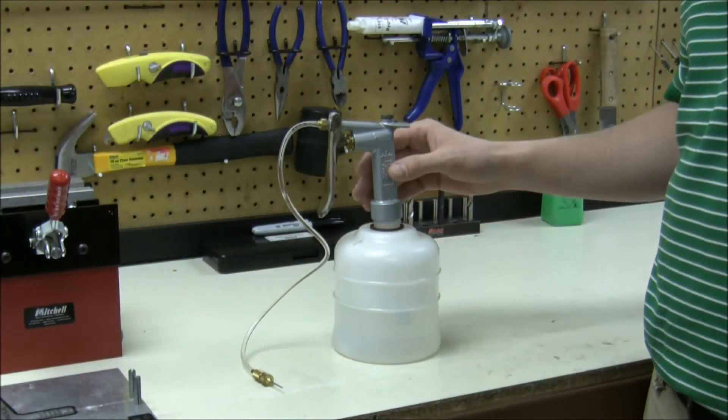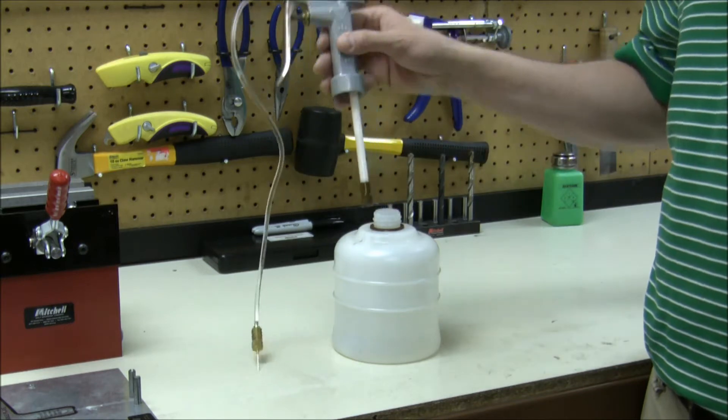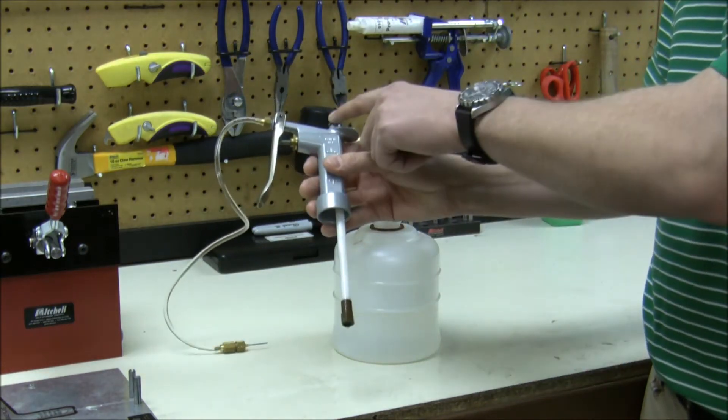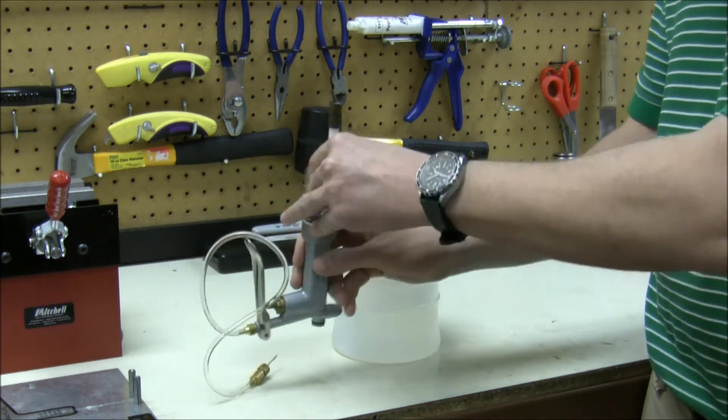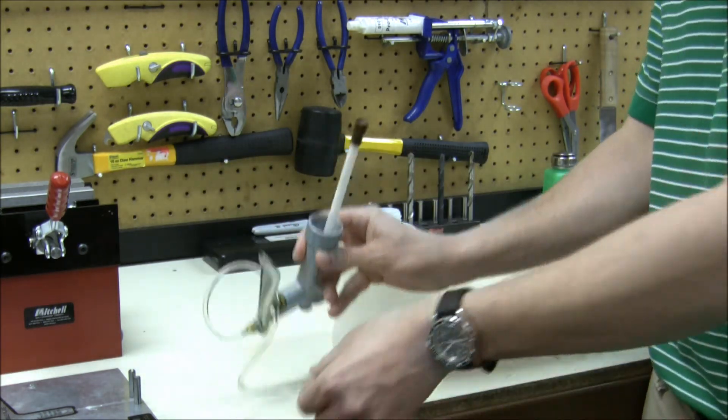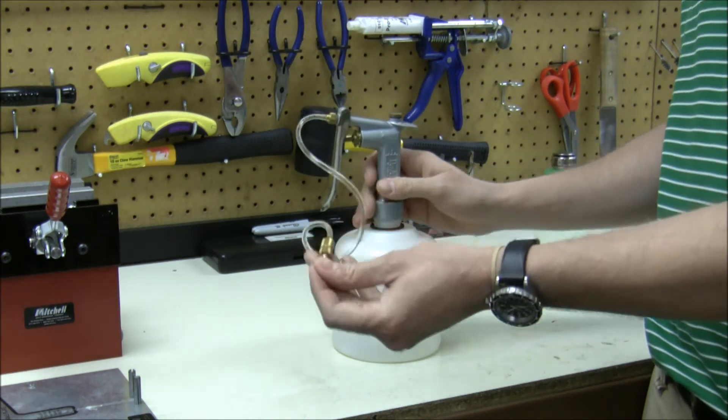If step 1 does not work, remove the handle and tap both the bottom and top against the table firmly. Replace handle and repeat step 1.